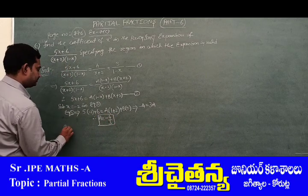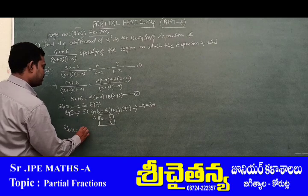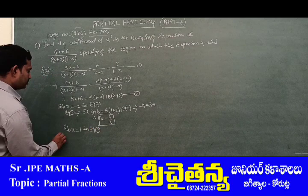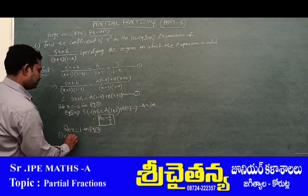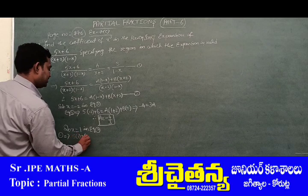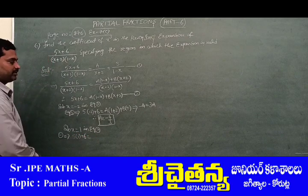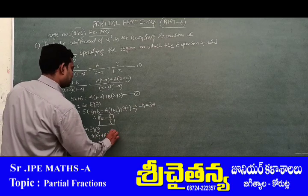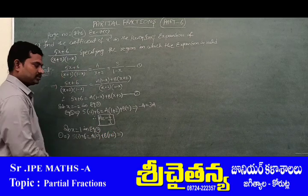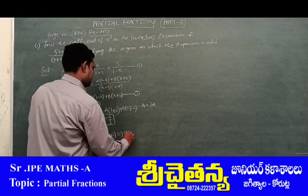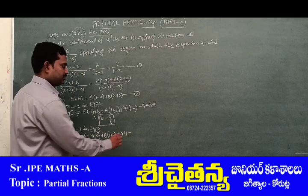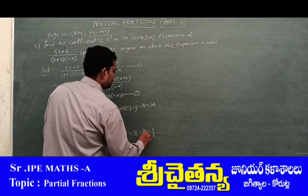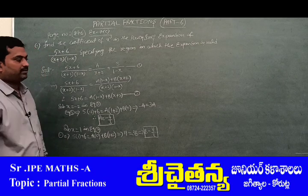Next, substitute x = 1 in equation number 2. Then: 5(1) + 6 = A(0) + B(1 + 2), which gives 11 = 3B. Therefore, B = 11/3.